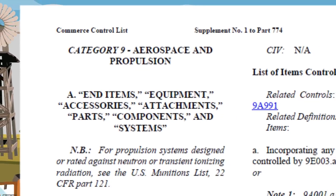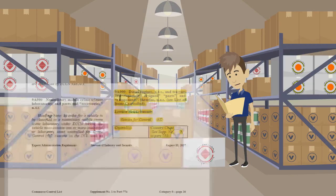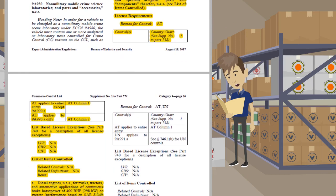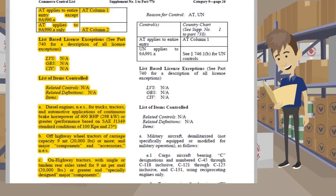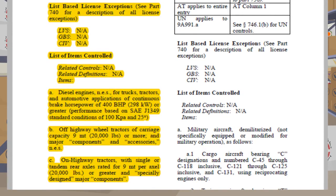Now we can start reviewing ECCN entries at the beginning of 9A of the Commerce Control List. Here we go — 9A990, diesel engines. My engines are far below the performance standards listed in A, B, or C. That's a great point. In reviewing ECCNs, you must read through the entire entry. If the ECCN contains a list of items controlled broken down into subparagraphs, it's important to read through these subparagraphs to determine if your item fits the parameters. Since your engines do not meet the technical specifications under subparagraphs A, B, and C, that means your engines are not controlled under ECCN 9A990.